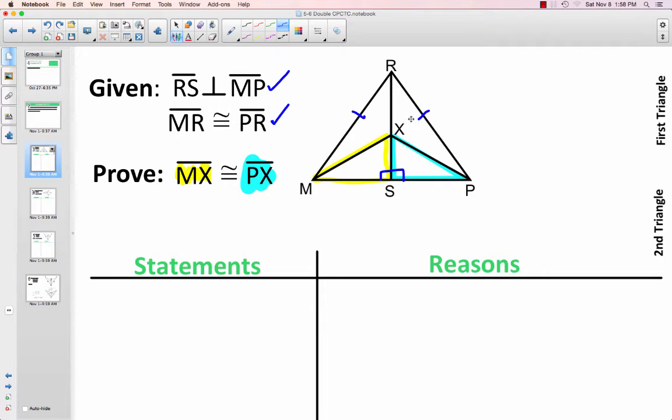But if these two sides are congruent, then these two angles opposite would be congruent as well. But again, these angles are not contained in the triangles we really want to prove congruent.